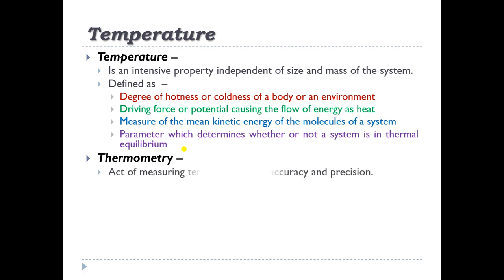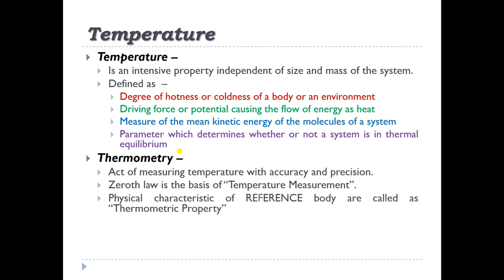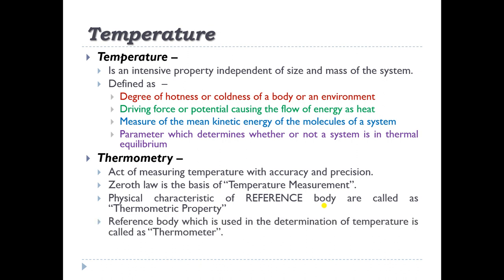Thermometry may be defined as the act of measuring temperature with accuracy and precision. The zeroth law is the basis of temperature measurement. In order to obtain a quantitative measure of temperature, a reference body is used where physical characteristics are selected, called the thermometric property. The reference body used in determination of temperature is called a thermometer. The physical characteristics of that thermometer constitute the measurement of temperature.